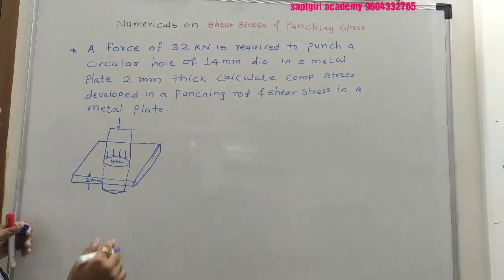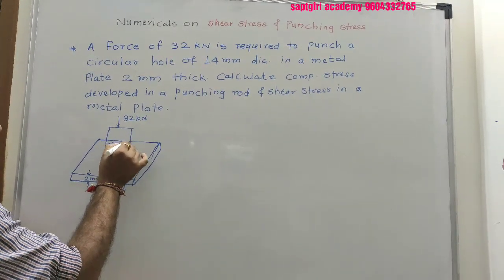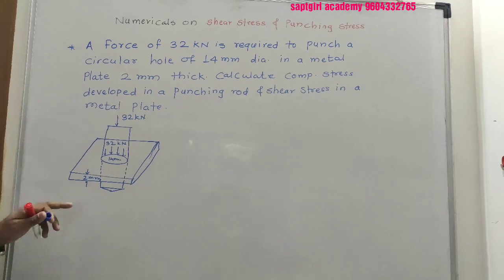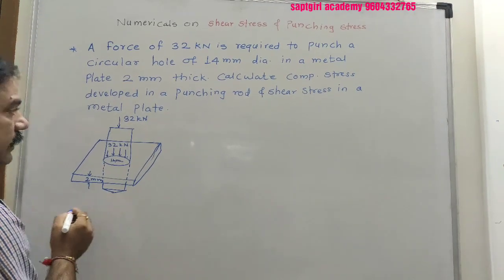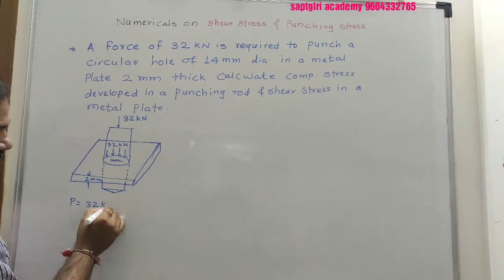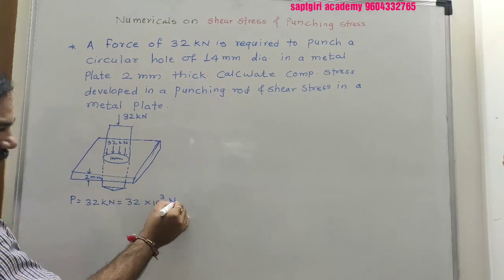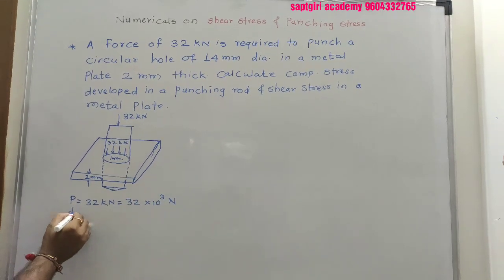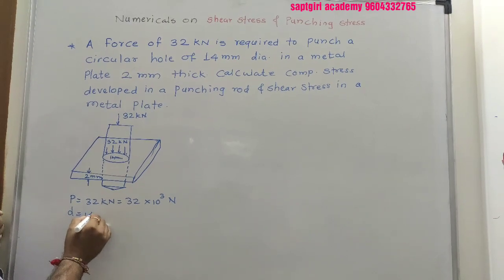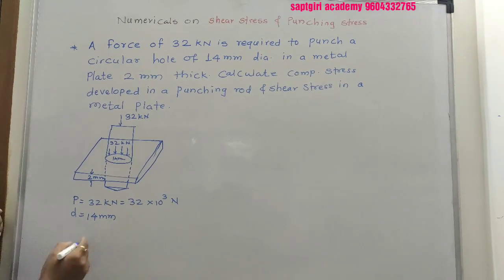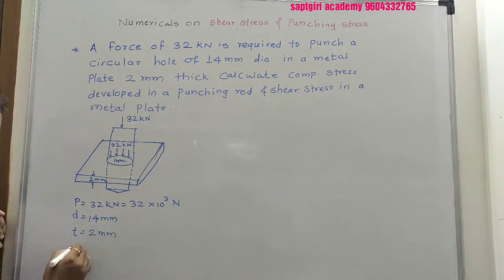A force of 32 kN on the punch is given and we have to punch a hole of 14 mm diameter. So the data is: P = 32 kN = 32 × 10³ N, diameter of rod or punch is 14 mm, and thickness of plate is 2 mm.